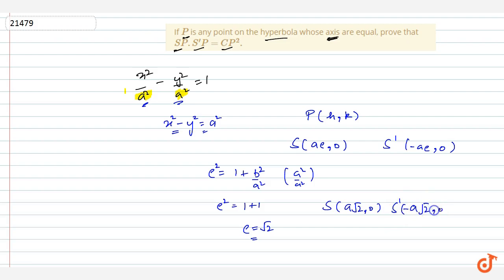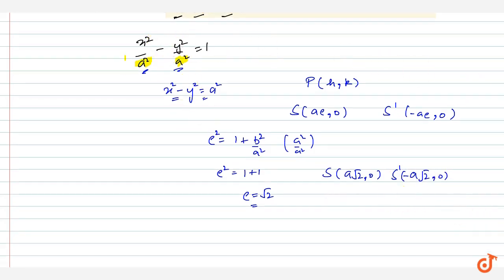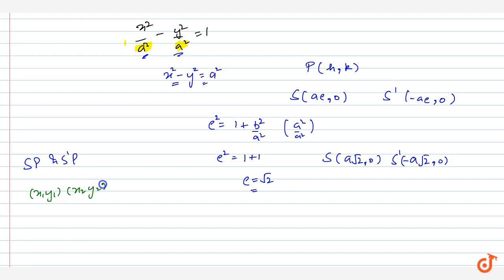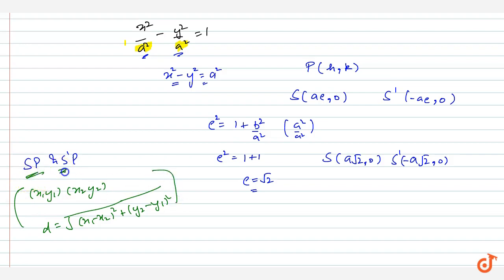We need to find SP and S'P. The formula for the distance between two points (x₁, y₁) and (x₂, y₂) is: distance = √[(x₁ − x₂)² + (y₁ − y₂)²]. Applying this formula, we can find SP and S'P.